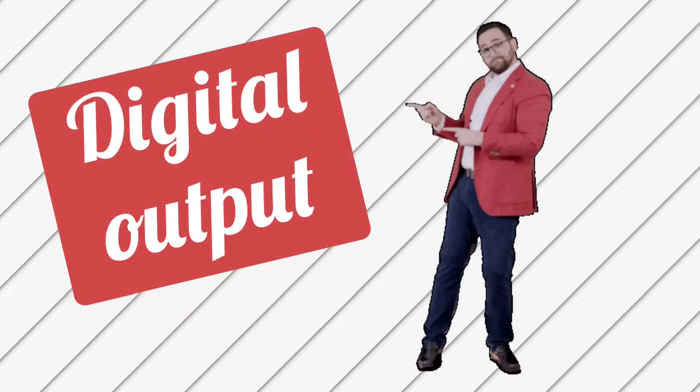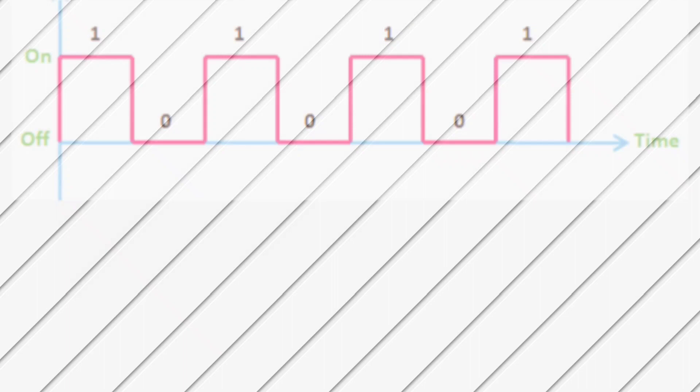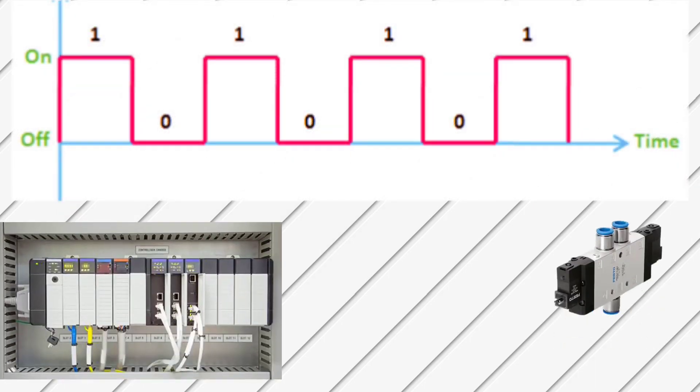Digital outputs, meaning on or off signals that are sent to the field, are called digital output signals. Examples of this are